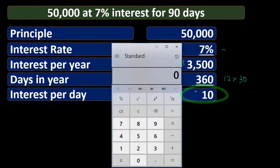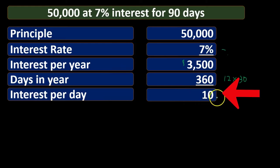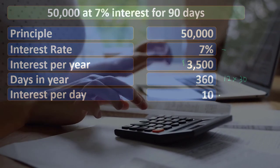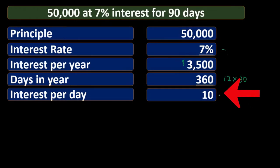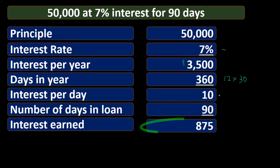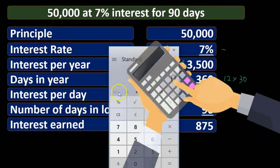So $3,500 per year divided by 360 days gives us about $9.72 per day — rounded to $10 as you'd see in Excel with decimals removed. Note that we're really multiplying by $9.72222, and when you deal with interest, not everything rounds out to the dollar or even the penny. We'll have some rounding differences. We then multiply that by 90 days, giving us $875.